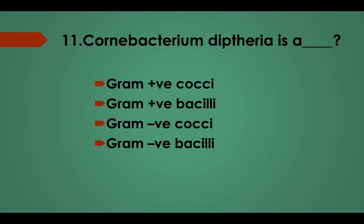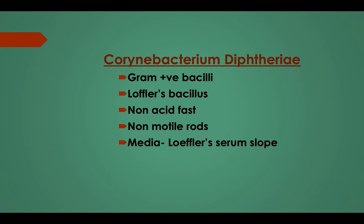Question No. 11: Corynebacterium diphtheria is: Option A, Gram positive coccus; Option B, Gram positive bacillus; Option C, Gram negative coccus; Option D, Gram negative bacillus. Answer: Option B, Gram positive bacillus. Also known as Löffler's bacillus. It is non-acid fast and non-motile. Culture media is Löffler's serum slope.